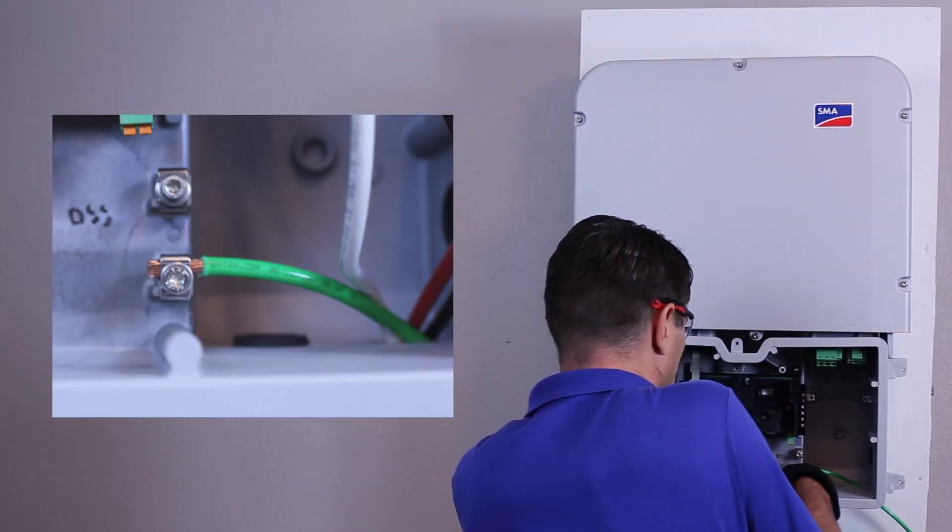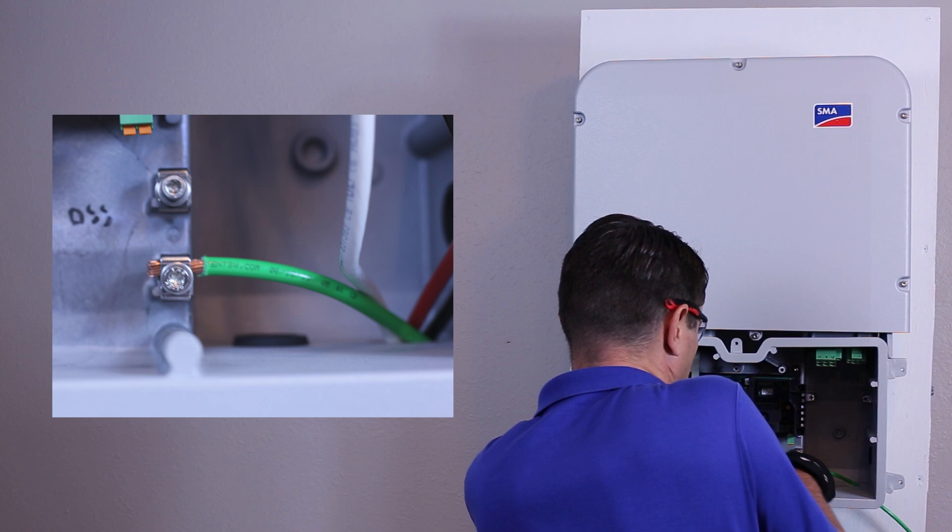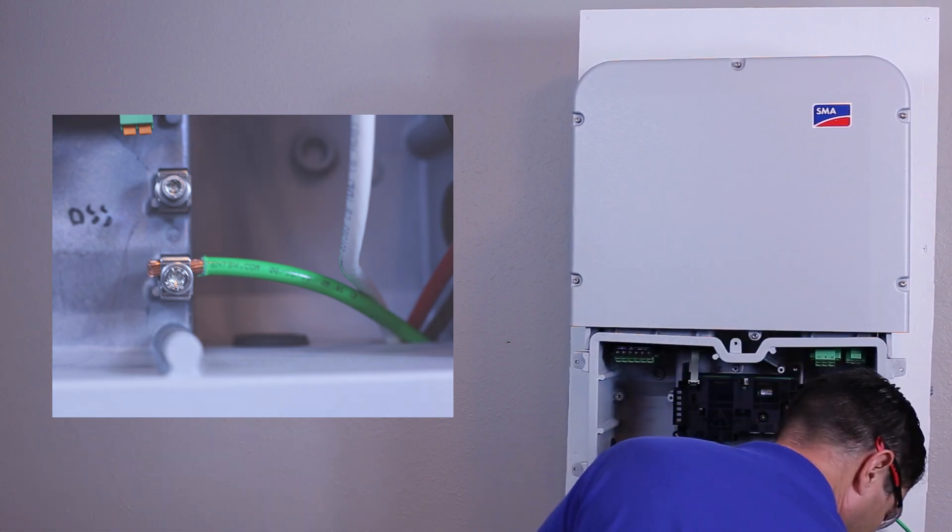Start with the AC equipment ground conductor. Ensure the exposed copper is secured between the washer and the clamp and tighten.